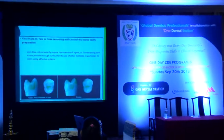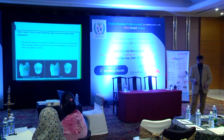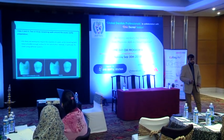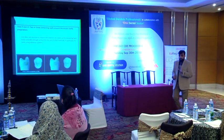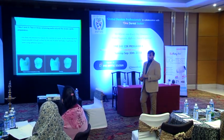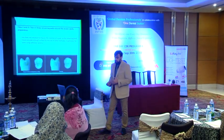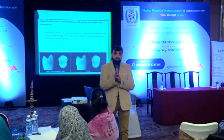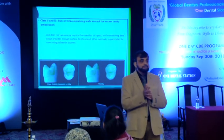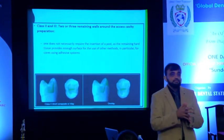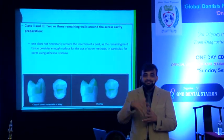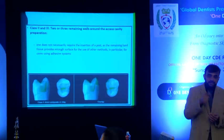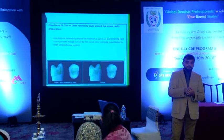Then you have Class 2 and Class 3 — if 2 or 3 walls are remaining, you just go ahead and do a composite restoration as a core. What type of core material is your favorite? Options include amalgam, cermet, miracle mix, and glass cermet.